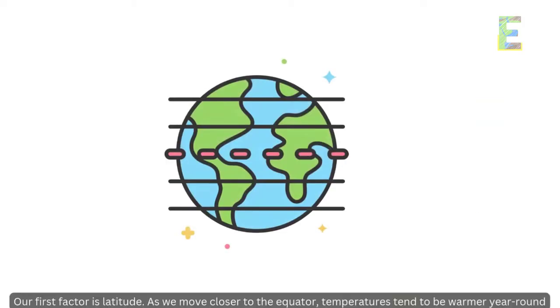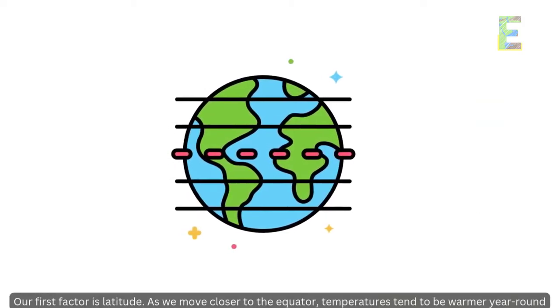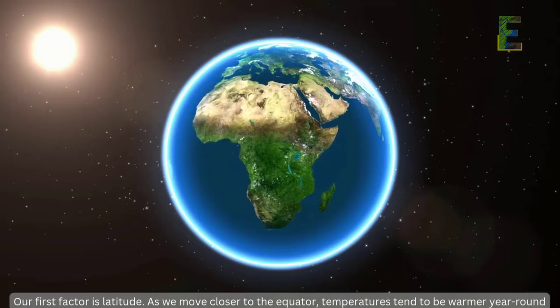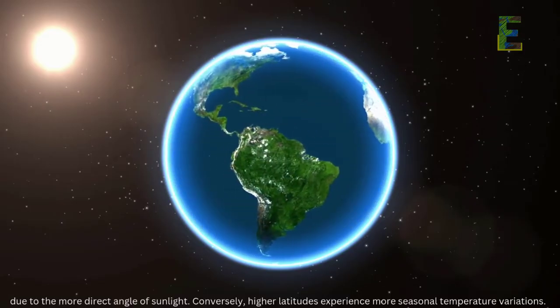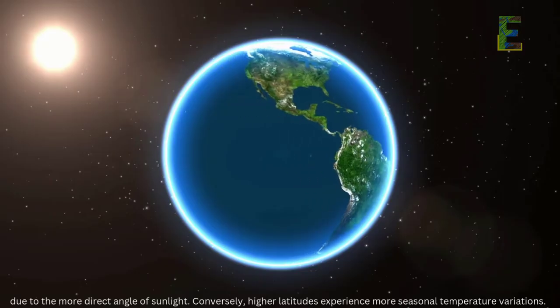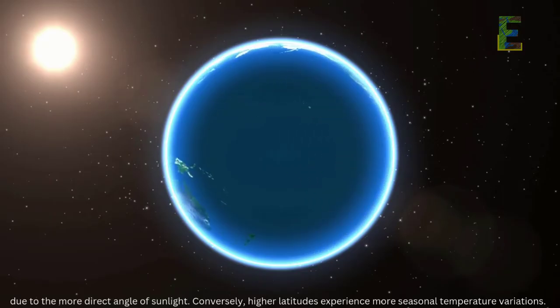Latitude. Our first factor is latitude. As we move closer to the equator, temperatures tend to be warmer year-round due to the more direct angle of sunlight. Conversely, higher latitudes experience more seasonal temperature variations.